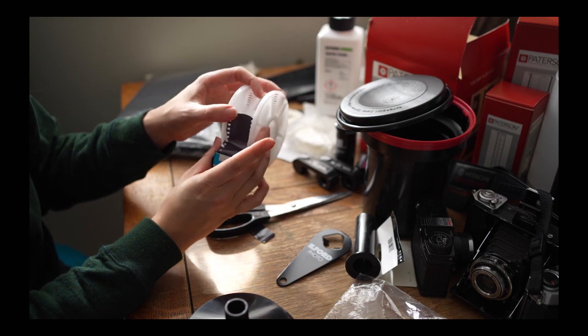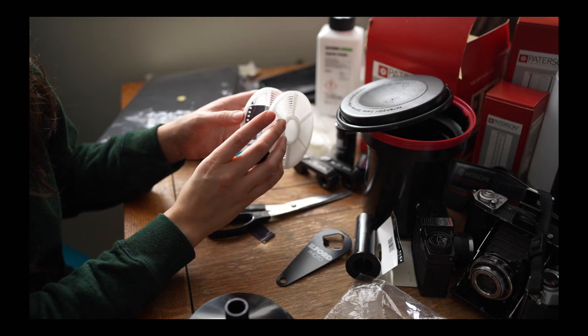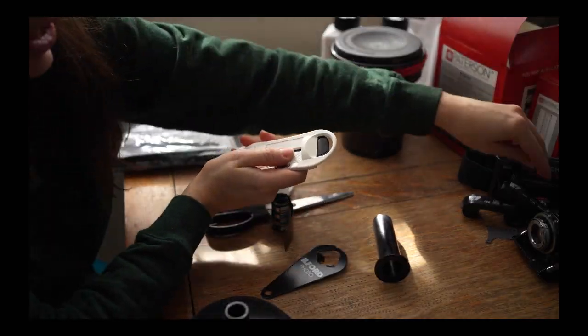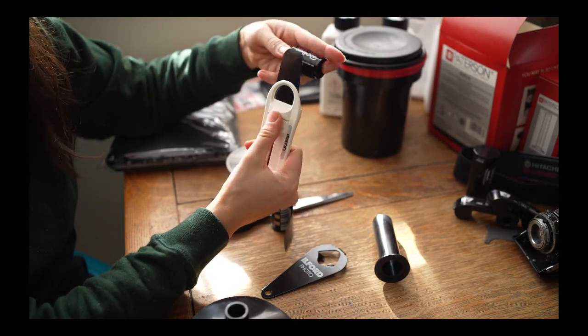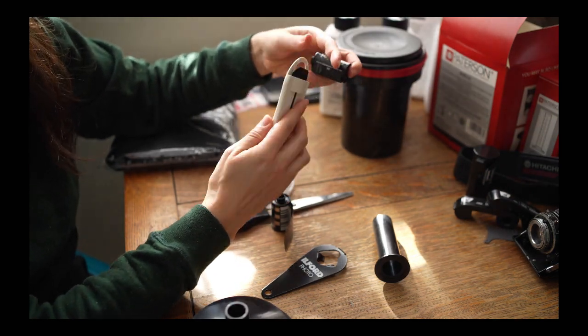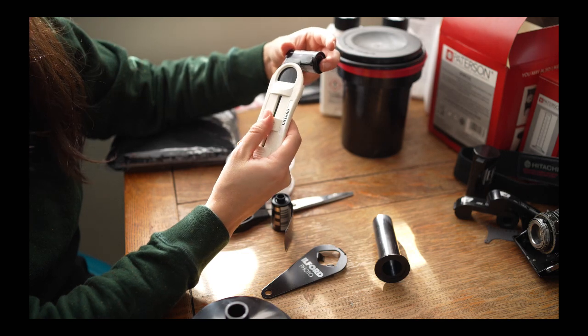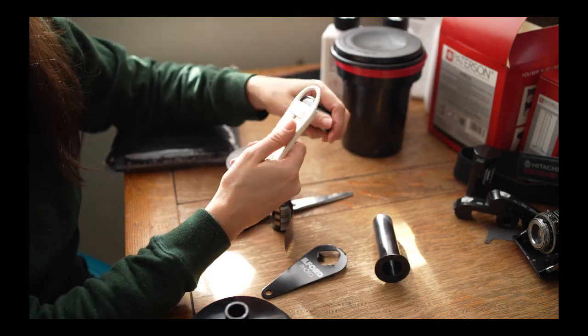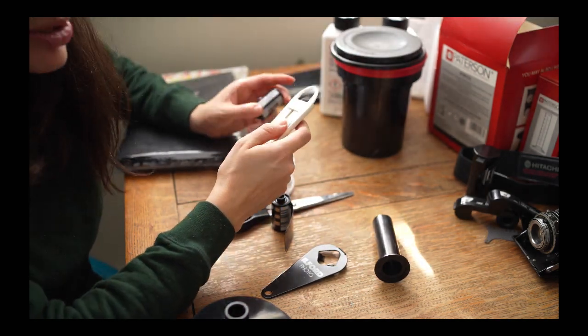See I can already tell that fits pretty nicely like that. And if the leader's not already out, like it's not on this one, you can actually use a film lead puller outer. I don't know what it's called, but you can use this to pull the lead out. That's what I did on some of the other rolls that I've been using for double exposures.